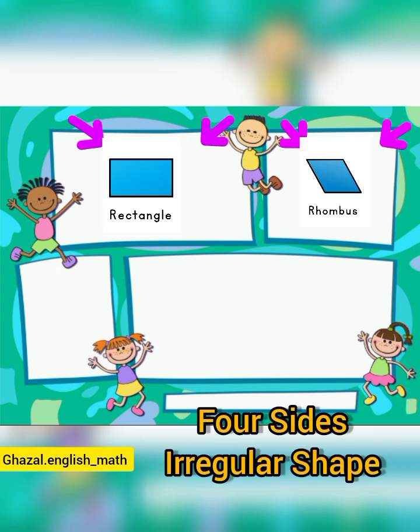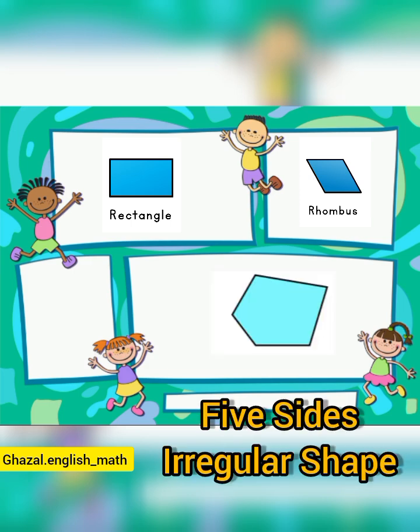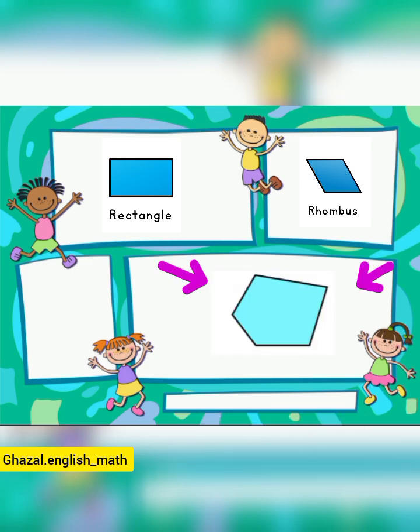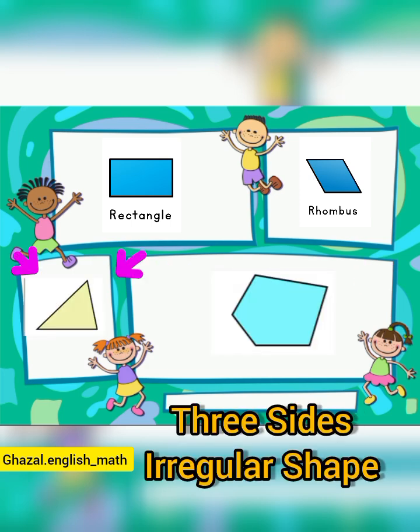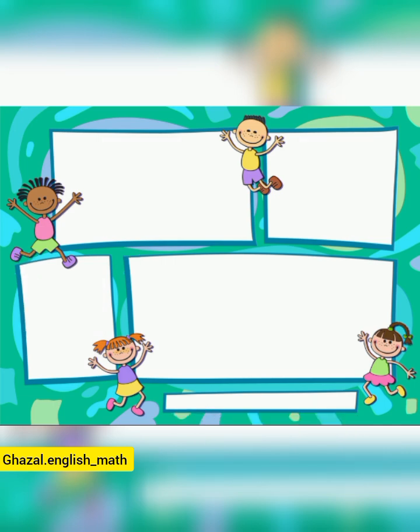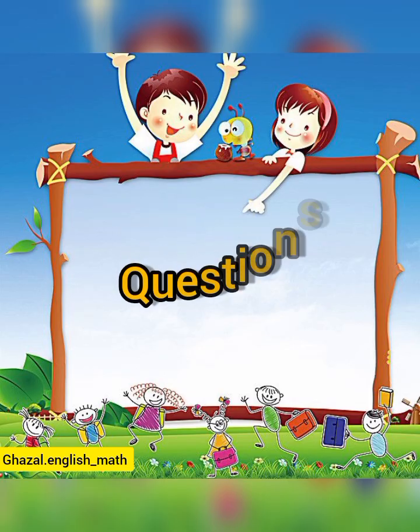Irregular shapes: a four-sided irregular shape is a rectangle, and also a rhombus. A five-sided irregular shape and a three-sided irregular shape: a triangle.